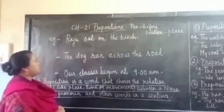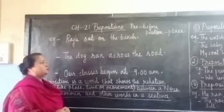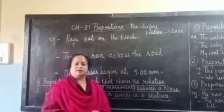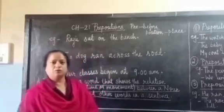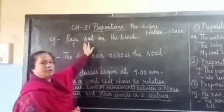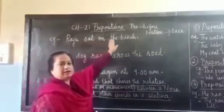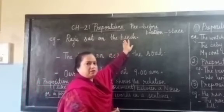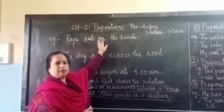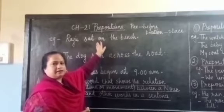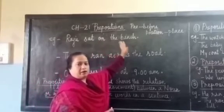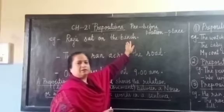The first example is: Raju sat on the bench. In this sentence, we are talking about Raju and we know that he sat. But he sat on the bench, so 'on' is the preposition in this sentence that tells us the position of Raju on the bench.